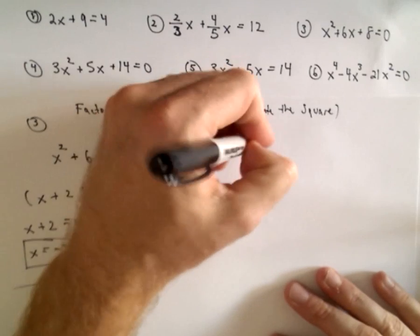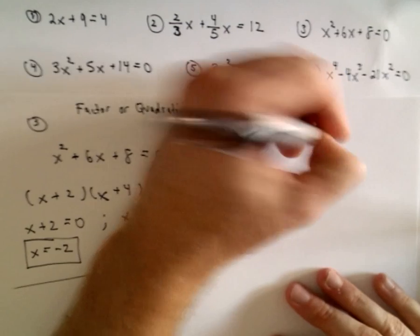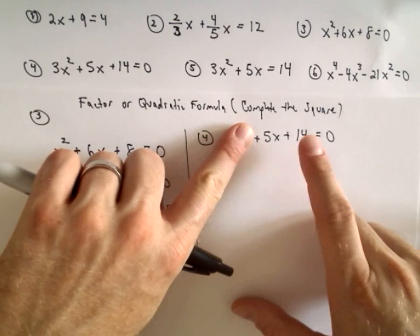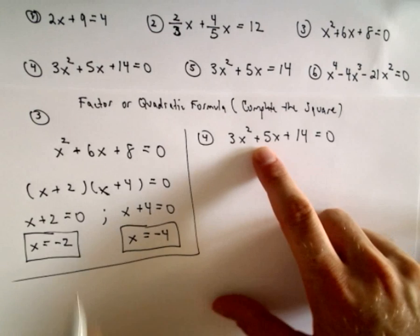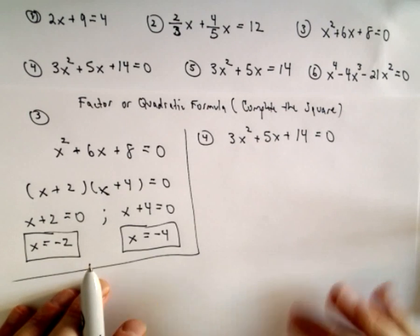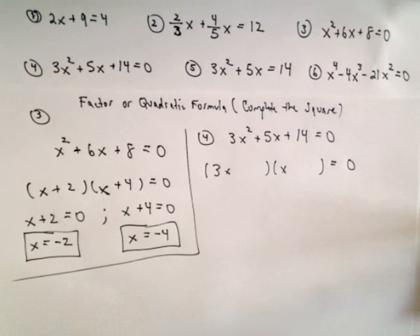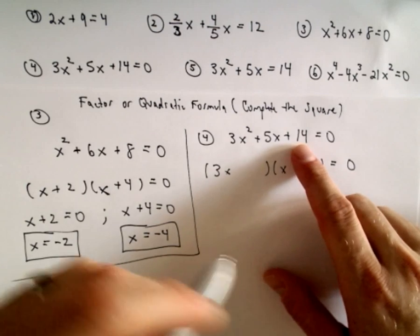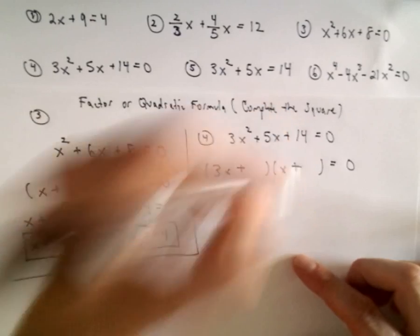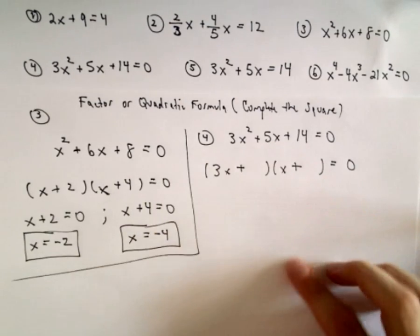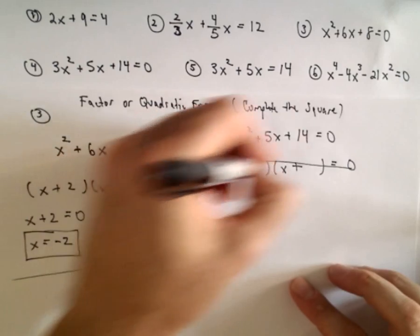Number 4: 3x squared plus 5x plus 14 equals 0. This one's already a little more difficult because now the trick of looking for two numbers that multiply to 14 but add up to 5 doesn't work because of this coefficient of 3. Typically for me I still try to factor by trial and error. I need two numbers that multiply to positive 14 and add up to positive 5 — so I need positive and positive. There's no way 1 and 14 works, and 2 and 7 won't distribute to give 5, so factoring is not going to work nicely.